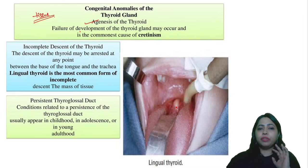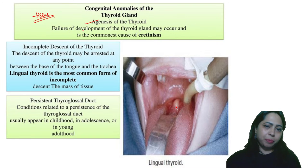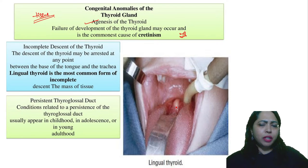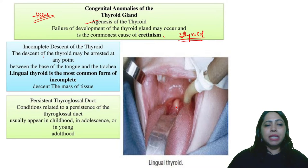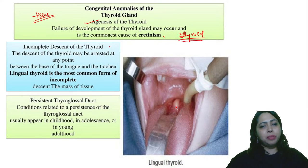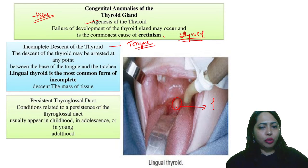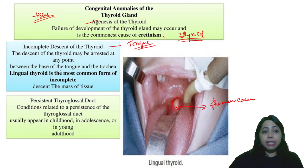Another anomaly is failure of development of the thyroid gland, which is the commonest cause of cretinism. There is also incomplete descent of the thyroid tissue — sometimes it may remain on the tongue itself, referred to as lingual thyroid. Normally it descends as the thyroglossal duct, passing the hyoid bone and cricoid cartilage, landing in front of the thyroid cartilage region. In lingual thyroid, you can see the thyroid tissue present on the dorsum of the tongue where the foramen cecum was supposed to be.